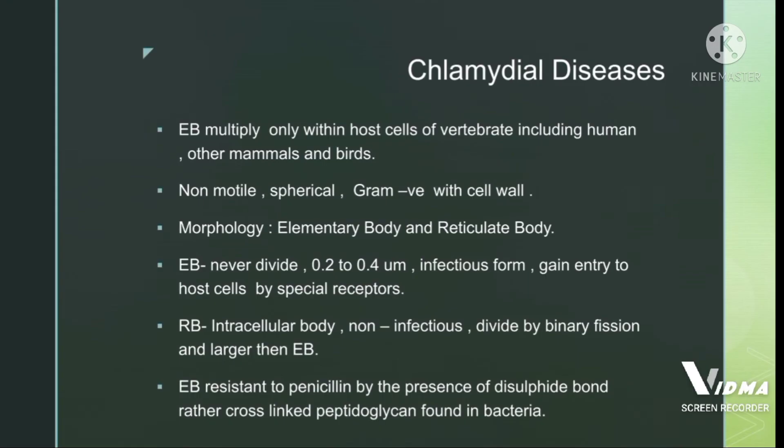The two morphological forms are the elementary body and the reticulate body. The elementary body never divides — the form that does not divide is the infectious form, and the form that divides is the non-infectious form. So infectivity and division are inversely proportional to each other.